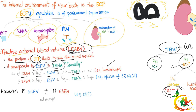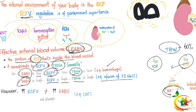If the effective arterial blood volume is low, you can deduce that extracellular fluid volume is low and total body sodium is low. Example: hemorrhage. When you have hemorrhage, the extracellular fluid volume is low. You're bleeding plasma which has salt and water, so total body sodium is low and effective arterial blood volume is low. Conversely, if effective arterial blood volume is high, extracellular fluid volume and total body sodium are high — for example, infusion of a 3% saline solution infuses more salt than water, so total sodium, ECF volume, and effective arterial blood volume are all high.